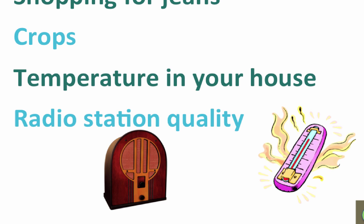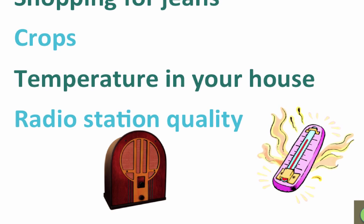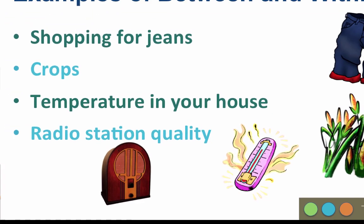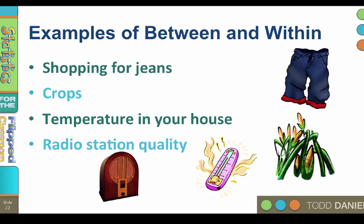Or radio station quality: the quality of songs varies between stations, but also within the station you're listening to. This is why you have a favorite radio station — you prefer the songs on that station over another type. That's variance between. But even within your favorite radio station, there are some songs you like better than others. That's variance within.